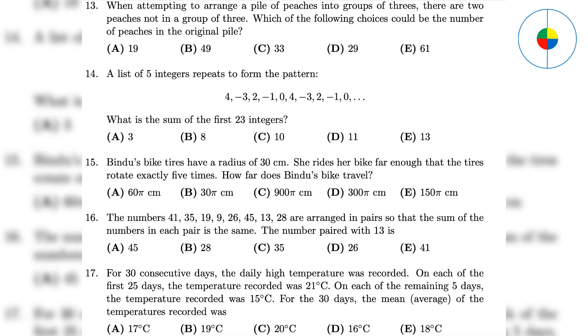Question 13: You need to check which number divided by 3 has a remainder of 2. The answer is 29.